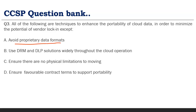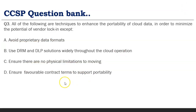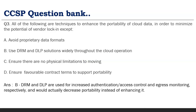Another question: which technique does NOT minimize vendor locking? Avoiding proprietary data formats reduces vendor locking. No physical limitations on moving data reduces it. A favorable contract reduces it. However, DRM and DLP solutions increase vendor dependency — you've installed and purchased software, implemented policies, and it's not easy to replace or move to another vendor. Therefore, DRM and DLP increase vendor locking, not decrease it.